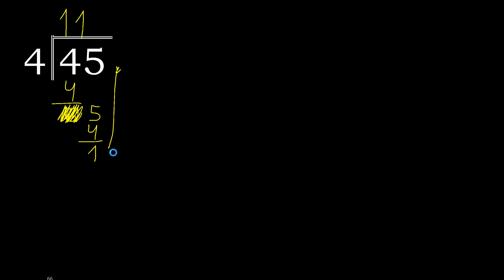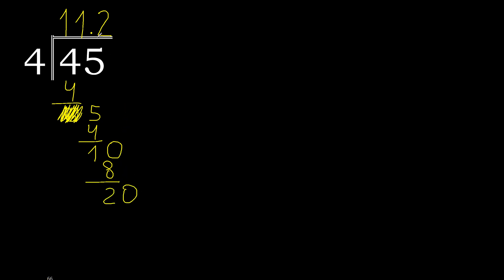There is no number, therefore always complete with a 0 here, with a decimal point. So we have 10. 4 multiplied by 3 is 12 — that is greater. 4 multiplied by 2 is 8. 10 minus 8 is 2. Always complete with 0, so the point is here and we bring down to get 20.